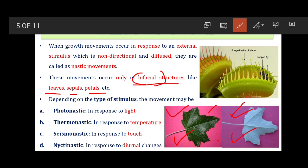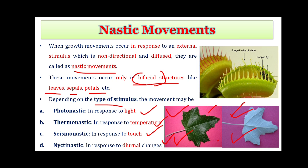In nastic movements there are certain kinds of stimuli: if it is light, then it is photonastic; if it is temperature, then it is thermonastic; if it arises due to touch, then it is seismonastic; and if changes occur due to light or day condition, it is nyctinastic. Likewise there are different kinds of nastic movements.